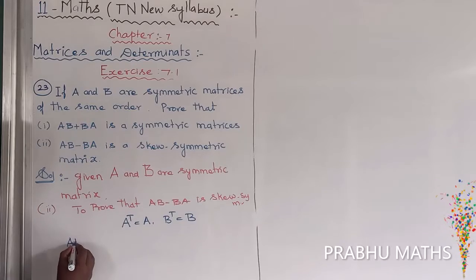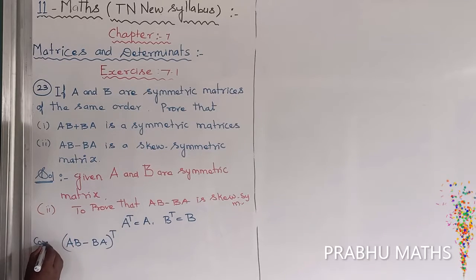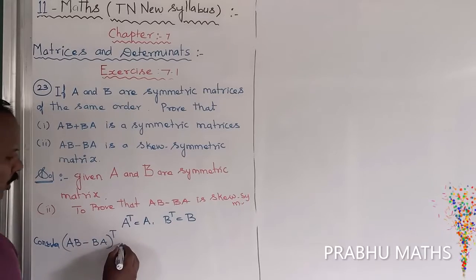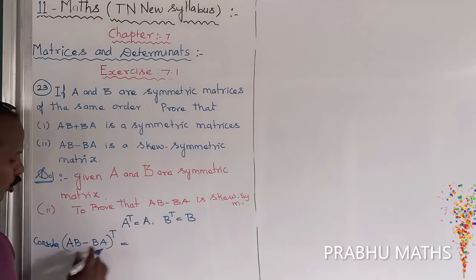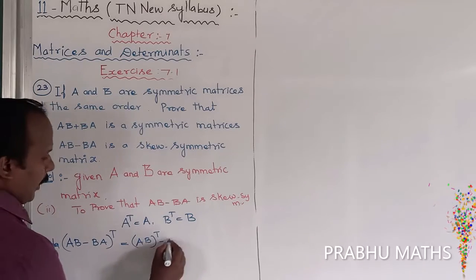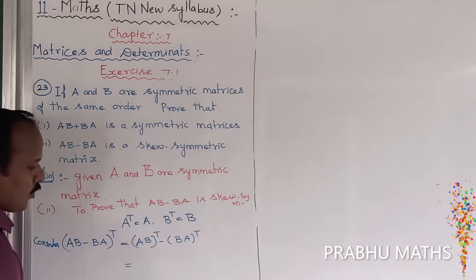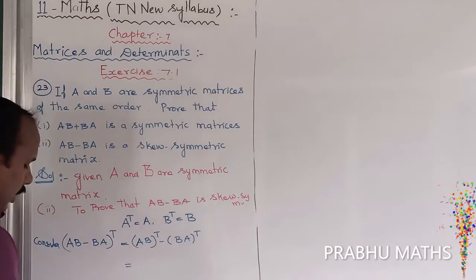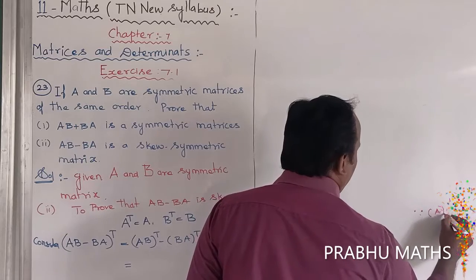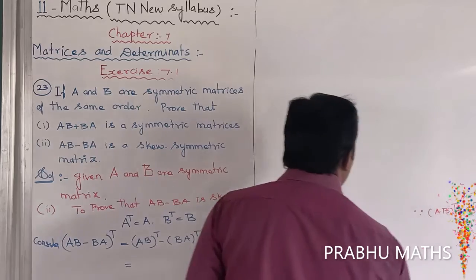Consider the value: AB minus BA, the whole transpose. That is equal to splitting into two terms: AB whole transpose, minus BA whole transpose. The formula states that AB whole transpose equals B transpose into A transpose.